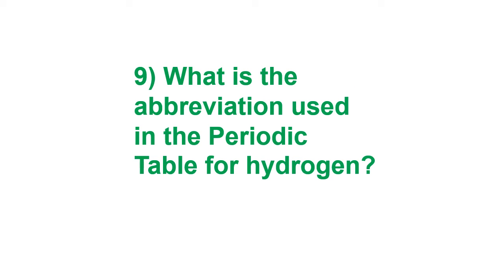Question nine: What is the abbreviation used in the periodic table for hydrogen? The answer is H — hydrogen is the first member of the periodic table. H is the symbol used for hydrogen. In ninth class we have already learnt the first 20 elements along with their symbols and atomic numbers.